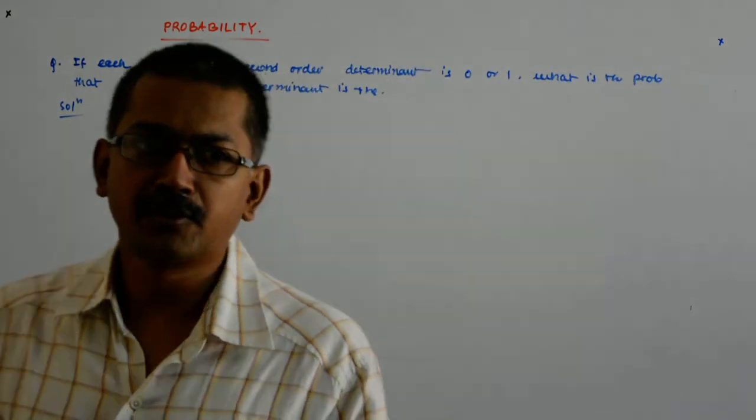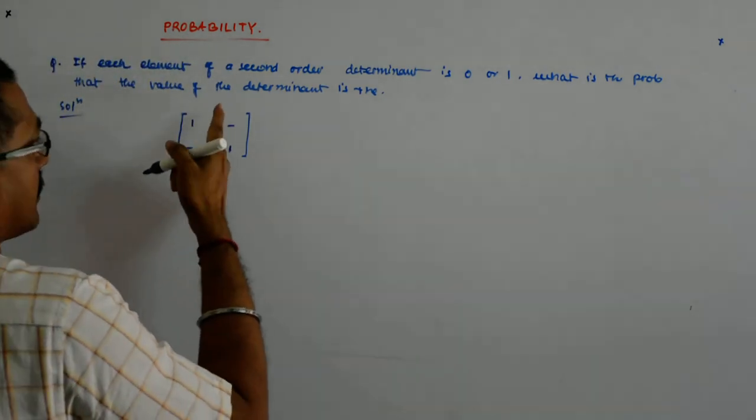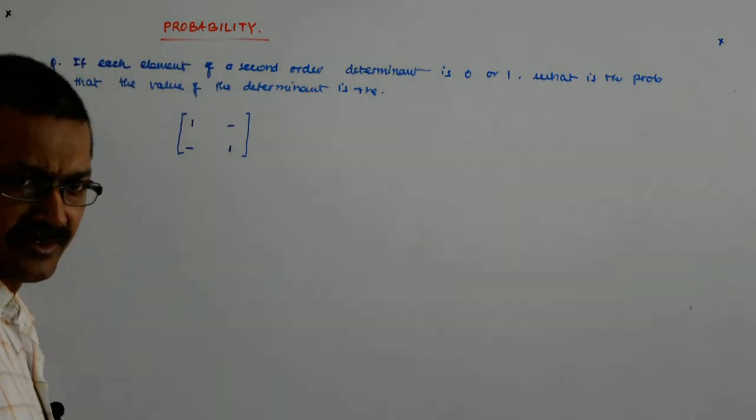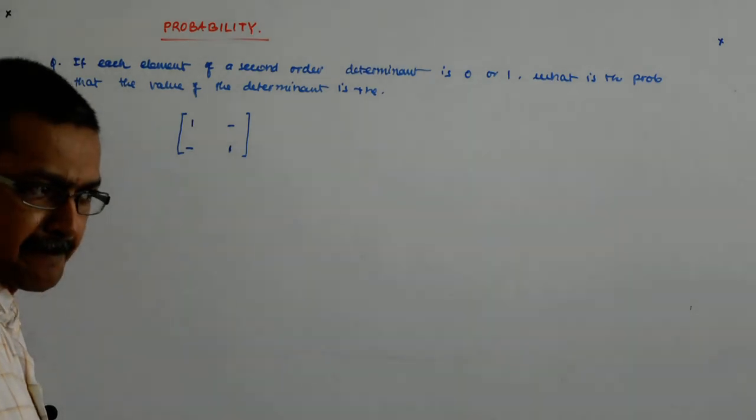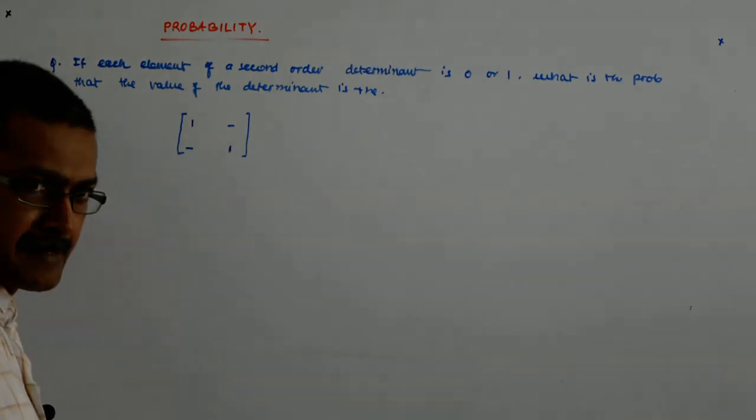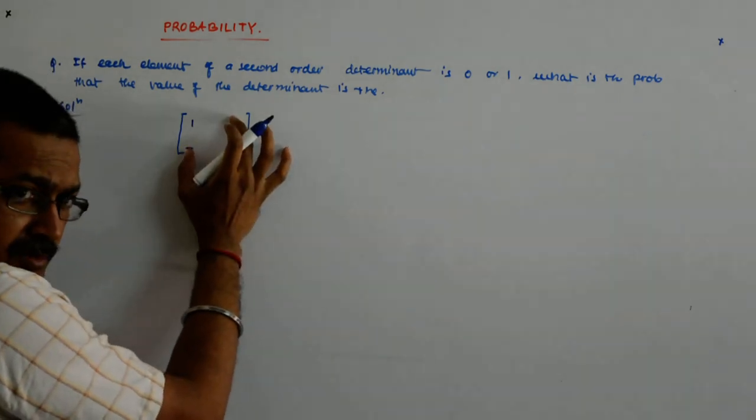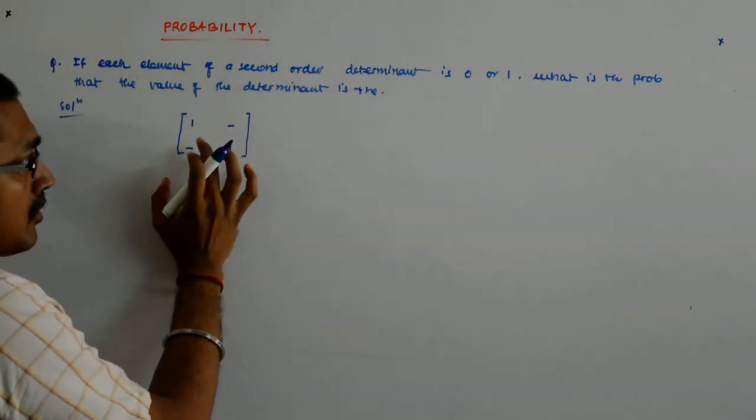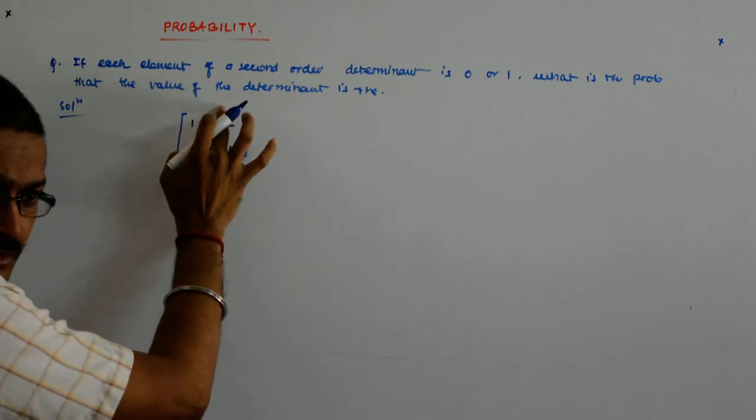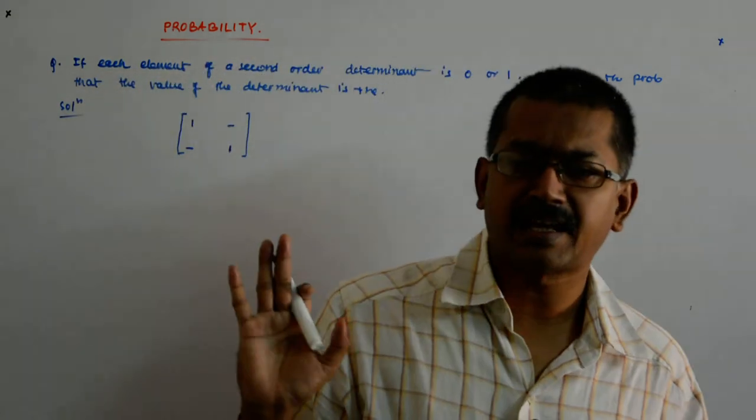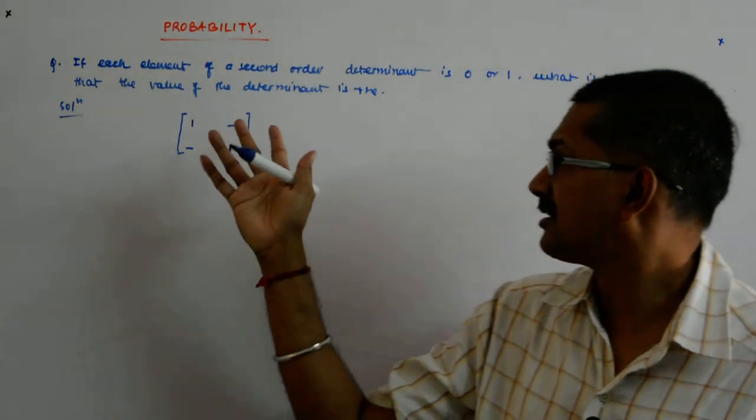Now, in how many ways can you put this to be 0? This can be 0 in how many ways? It can be 0 or 1. Either both 0s, or 1,0 or 0,1. Apart from that, nothing else. So there are only 3 ways in which this can be 0.